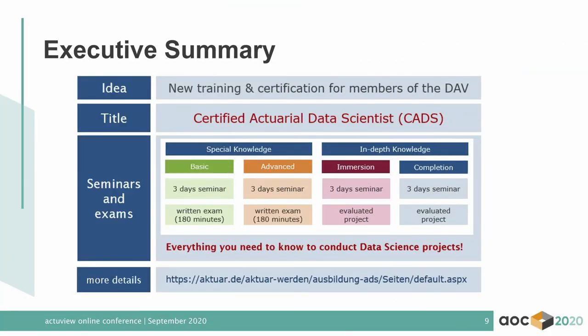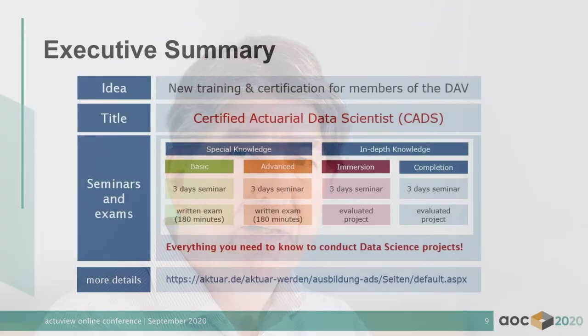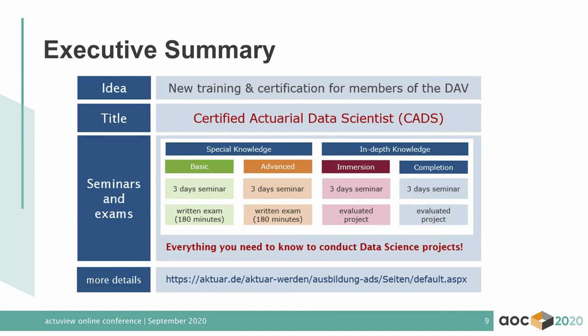Here we have an executive summary and an overview of the structure of the qualification. Since 2019, the seminars ADS Basic and Advanced have been offered in March and September respectively. Next week we have the second ADS Advanced Seminar, taking place in Cologne and Munich, but this year we are doing it online — a three-day online seminar. The seminars ADS Immersion and Completion will start in 2021 in March and August respectively, so you can get the title after August next year. In these four modules you will learn everything you need to know to conduct a data science project.